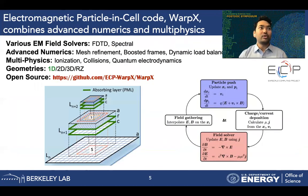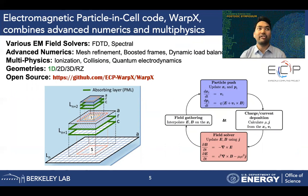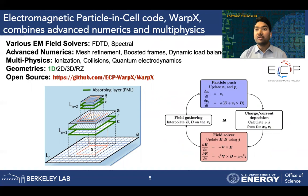Let's begin with the first code, the electromagnetic particle-in-cell code WarpX. It is an advanced particle-in-cell code which combines multiphysics modeling capabilities with advanced numerical features such as mesh refinement, boosted frames, and dynamic load balancing. It also contains multiple solvers for solving Maxwell's equations — some solvers are based on finite difference time domain technique and others utilize spectral solvers such as PSATD. This code now supports 1D, 2D, and 3D Cartesian geometry and RZ cylindrical geometry. The 1D support was recently added and it was my first contribution and learning experience with WarpX and the AMReX framework.